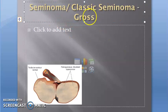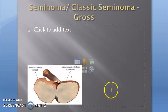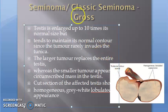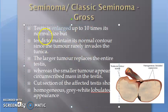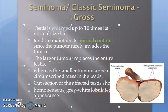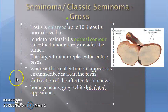Now let's look at the classic seminoma gross morphology. The testis is enlarged to ten times the normal size. It tends to maintain its normal contour because the tumor never invades the tunica. A larger tumor replaces the entire testis, whereas a smaller tumor appears as a circumscribed mass within the testis.